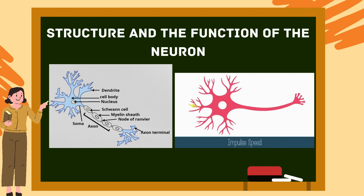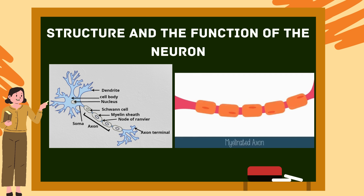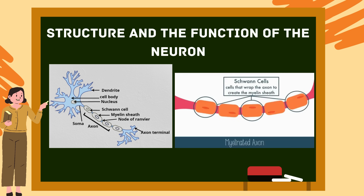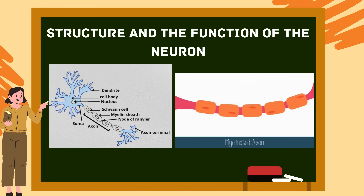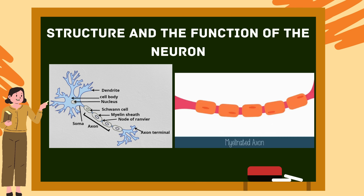A nerve impulse travels about one meter per second, but many nerve fibers can transmit signals up to 100 times faster. Special cells called Schwann cells grow around the axon in wrapped layers, creating a coating of myelin — a phospholipid bilayer — which acts as an insulator on the axon. Between each Schwann cell is a small gap of exposed axon called a node of Ranvier. In a myelinated axon, the electrical impulse jumps quickly from node to node — this is called saltatory conduction (from the Latin 'saltare', meaning jump) — allowing impulses to travel up to 100 meters per second.